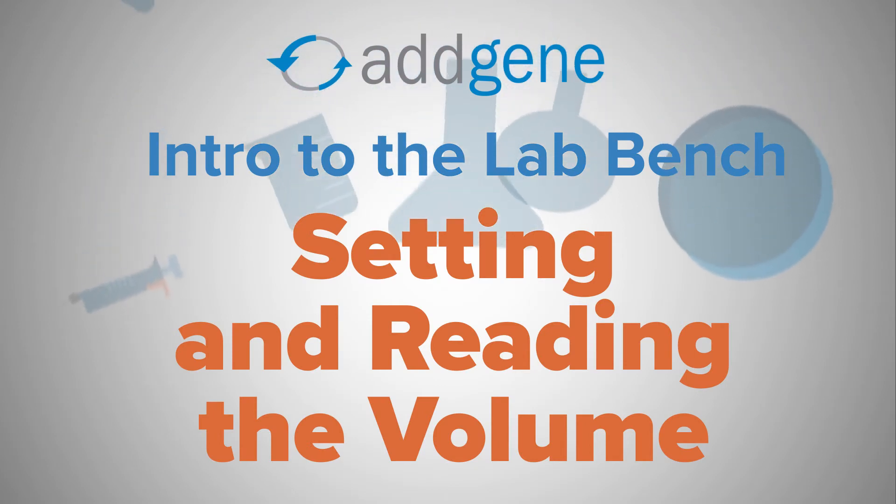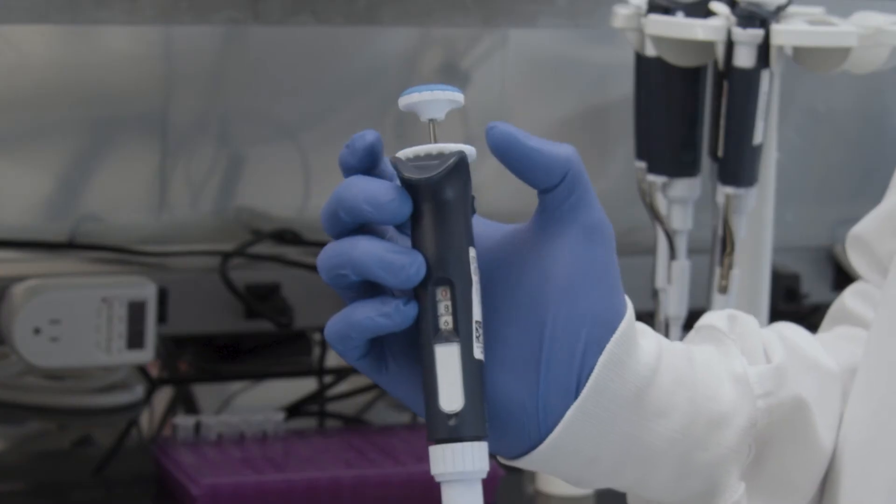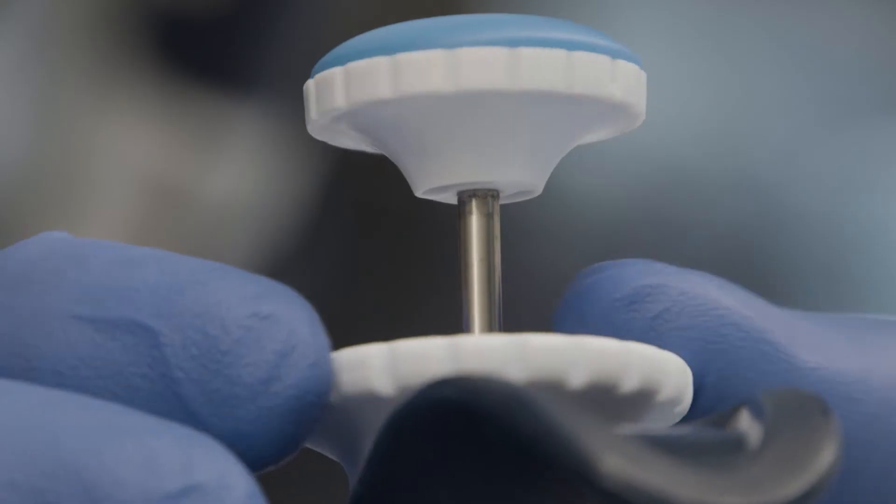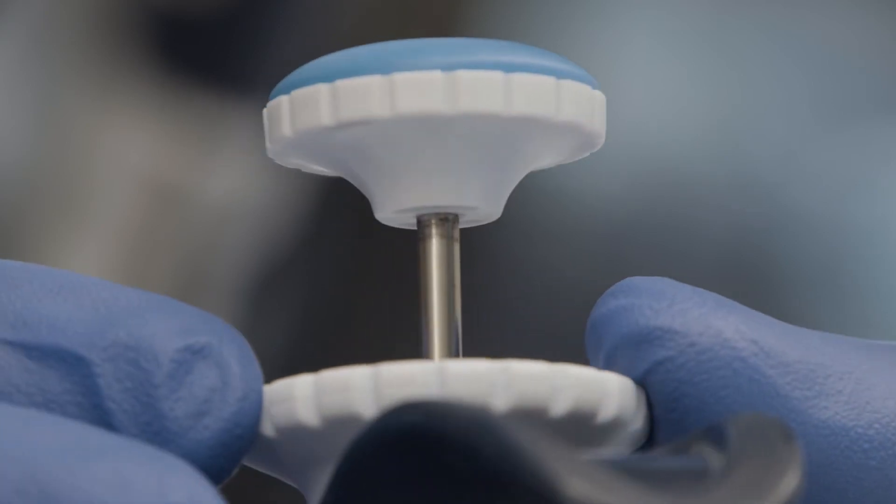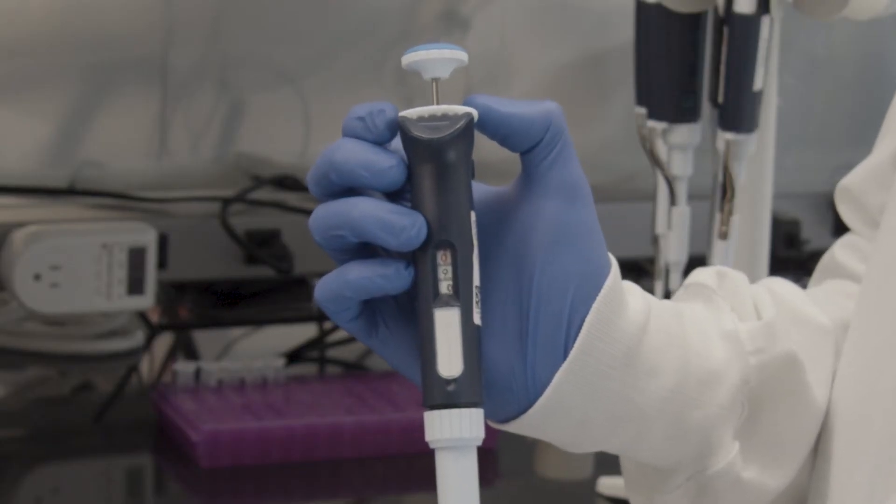Feeling more comfortable with the pipette? Great! Let's talk about setting and reading the volume on the pipette. Setting the volume is the same across all standard pipettes. Just rotate the ring below the plunger to increase or decrease the volume. But, reading the display is slightly different across different pipette sizes.